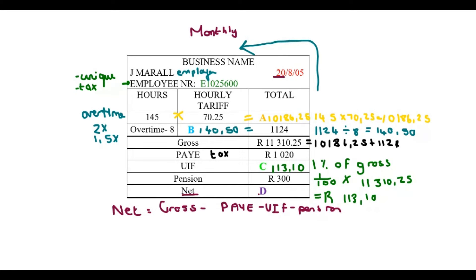I'm going to substitute the values: 11,310.25 for the gross, payee 1,020, 113.10 for the UIF, and 3,100 for the pension. I'm left with a net amount of 9,877.15.